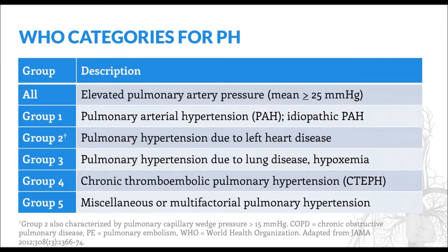The World Health Organization, or WHO, categorizes pulmonary hypertension into five groups, all of which are characterized by an elevation in mean pulmonary artery pressure. Group 1 patients are those with pulmonary arterial hypertension, or PAH, which will be the focus of this presentation. Group 2 is the largest category and represents those who have pulmonary hypertension as a result of left heart disease, and an increase in pulmonary pressure that often results.